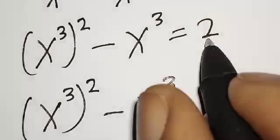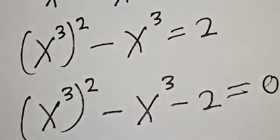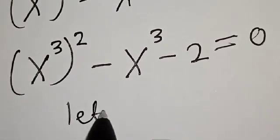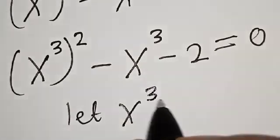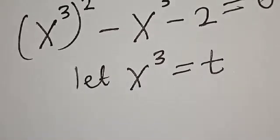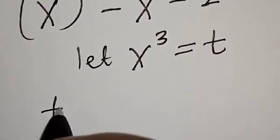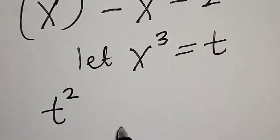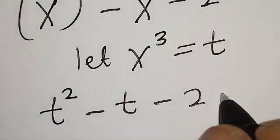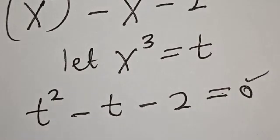Then, bringing the 2 to the other side, minus 2 is equal to 0. Now let s raised to power 3 equal t. Then we have t squared minus t minus 2 is equal to 0. This is a quadratic equation.